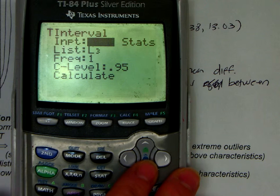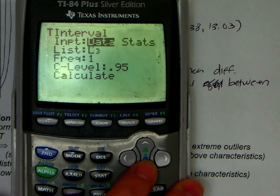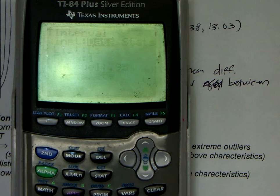Notice data - if it's matched pairs you're always going to be given data like that, unless they give you just the difference list. My list is L3 because it's all about the differences. I'm doing a 95% confidence interval, hit calculate.